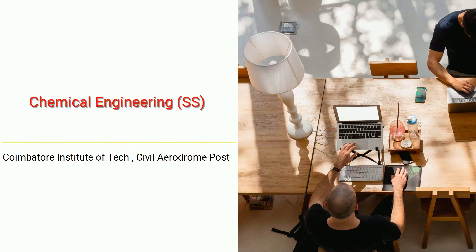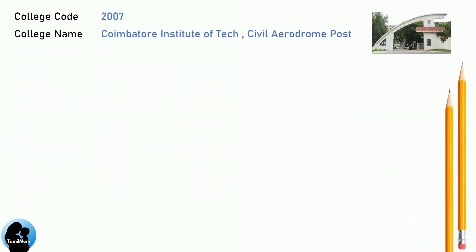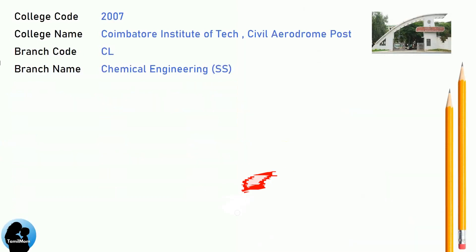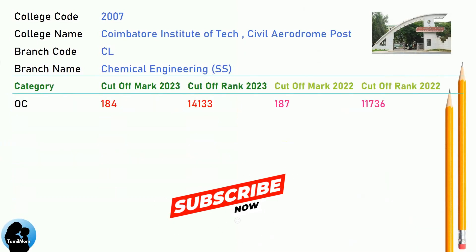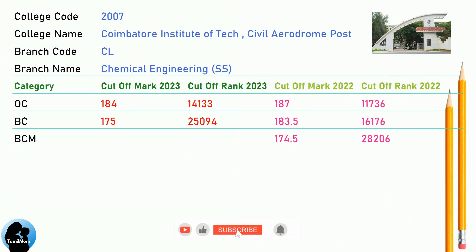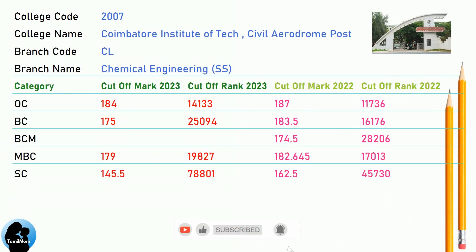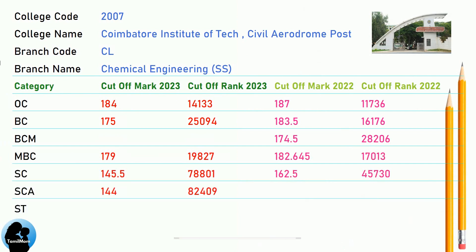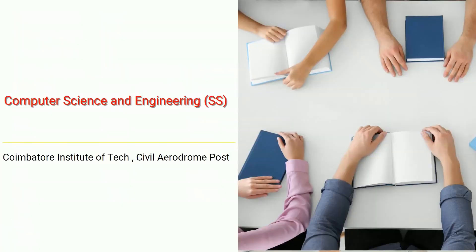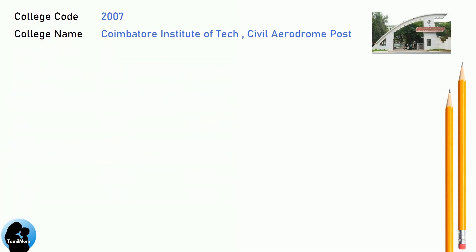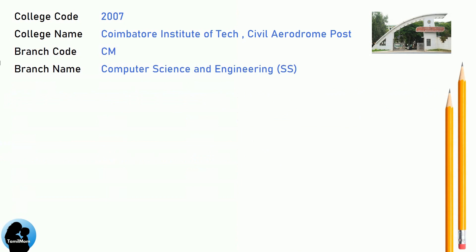Coimbatore Institute of Technology Cut-Offs for Chemical Engineering. Coimbatore Institute of Technology Cut-Offs for Computer Science and Engineering.